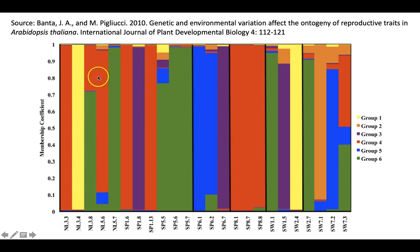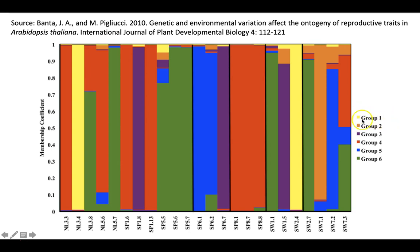These columns represent individuals from my study — this is from a paper I did in 2010. These individuals are not humans; these are individual plants. Just like with humans, we can figure out the different ancestries the plants belong to. In this case we don't know from what geographic area their ancestors came from, but we can still identify group one, group two, group three, group four, group five, and group six ancestors.